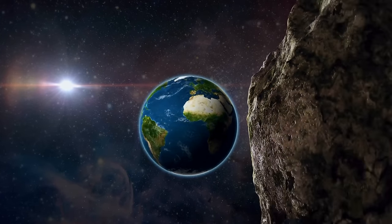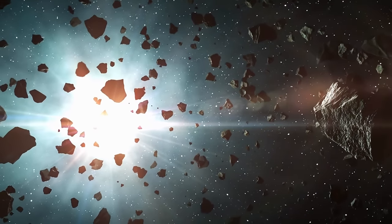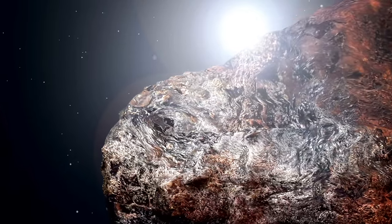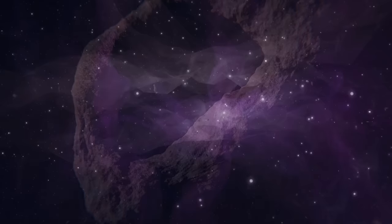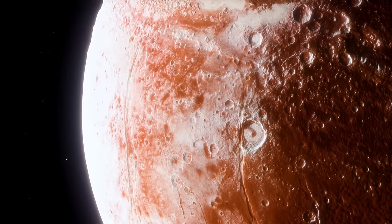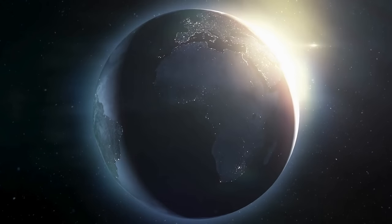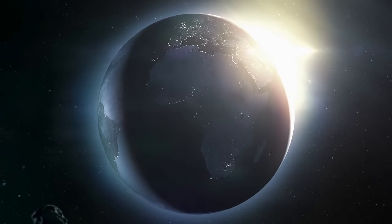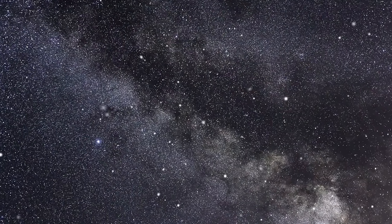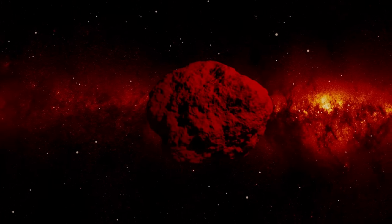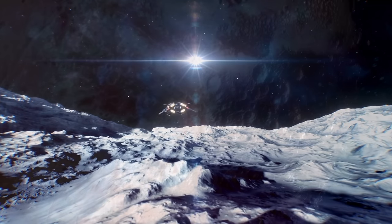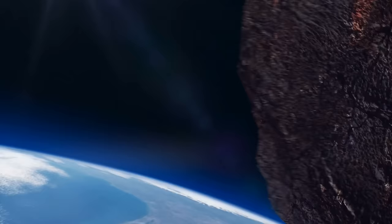This high velocity has led to the hypothesis that Oumuamua may have originated from a binary star system. The theory proposes that gravitational interactions within binary star systems can eject objects at high velocities. If Oumuamua did indeed originate from such a system, it is plausible that the gravitational forces exerted by the stars propelled it on its interstellar voyage, accounting for its remarkable speed. Another possibility suggests that Oumuamua's velocity was a result of interactions with other celestial bodies in its home star system. Encounters with planets or other sizable objects could have acted as gravitational slingshots, propelling Oumuamua to its observed velocity.